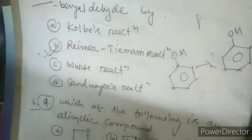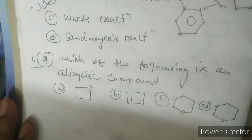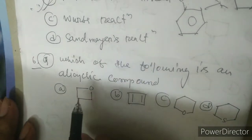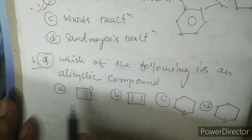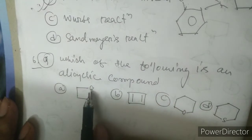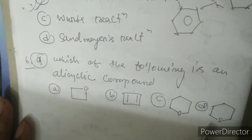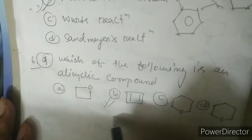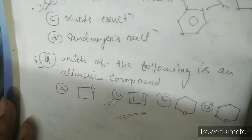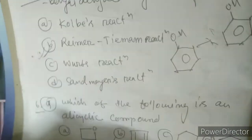Last question: which of the following is an alicyclic compound? You can see oxygen is added in one option and sulfur in another — those are heterocyclic compounds. You can easily ignore those options and option B is the correct answer — it is the alicyclic compound.